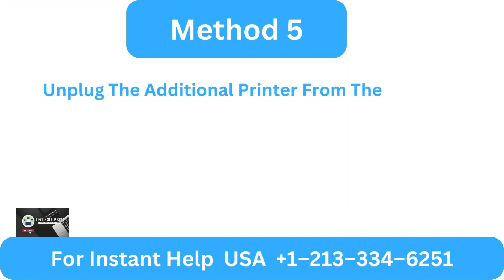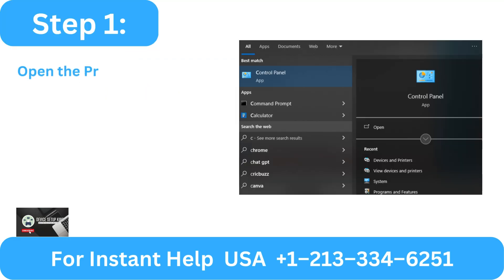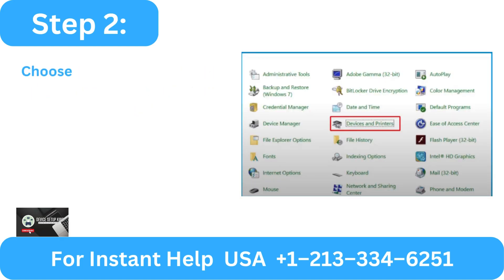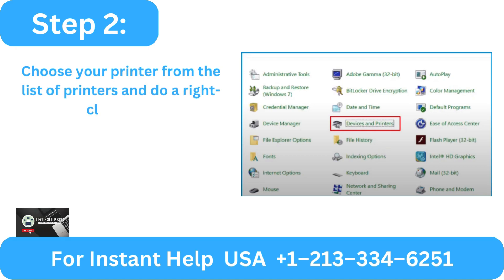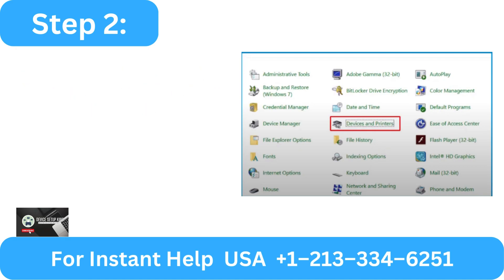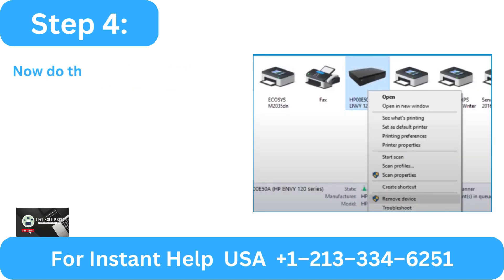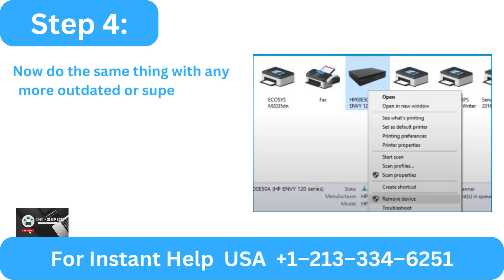Method 5: Unplug the additional printer from the computer. Step 1: Open the printers and devices pane from the control panel application. Step 2: Choose your printer from the list of printers and right click on it. Step 3: To unplug the idle printer, choose remove device. Step 4: Do the same with any outdated or superfluous printers.